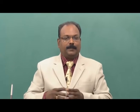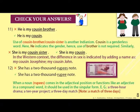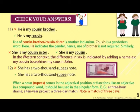Example eleven is a typical Indian English usage. 'He is my cousin brother' is wrong. The correct form is 'He is my cousin' because the pronoun 'he' itself indicates the gender. The use of 'cousin brother' or 'cousin sister' is an Indianism. Cousin is a genderless word, and the pronoun indicates the gender, hence use of 'brother' is not required. Similarly, 'She is my cousin' is correct, not 'cousin sister'.